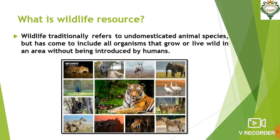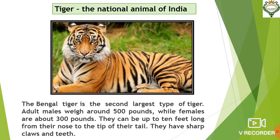Our country, India, has a rich variety of wildlife. The most important animal of our country is the tiger. The tiger is the national animal of India. It is commonly found in the foothills of the Himalayas and the monsoon forests in central and southern India, as well as the Sundarban forest in the Ganga-Brahmaputra delta. The Royal Bengal tiger is the second largest type of tiger. Adult males weigh around 500 pounds while females are about 300 pounds.